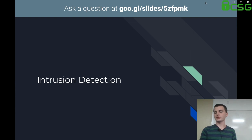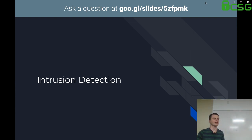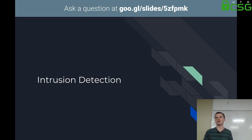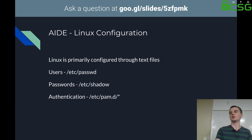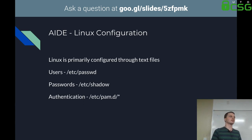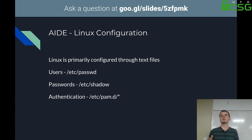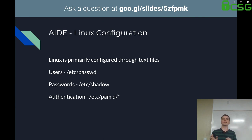On to intrusion detection, a section covered in the Red Hat security manual — generally not something you see in standard deployments due to perceived complexity, but it's actually very simple. Some background: Linux is going to be primarily configured through flat text files. Almost everything on your system can be configured with a text file — every user is in /etc/passwd, every password should be in /etc/shadow (if it's in /etc/passwd, Google how to fix that), and all your authentication configuration will likely be in /etc/pam.d.